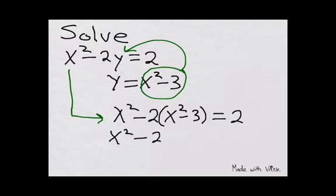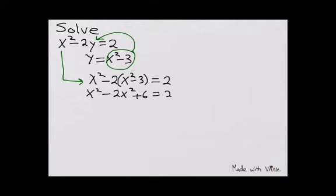x squared minus 2x squared plus 6 equals 2. Now I can write that as negative x squared equals negative 4, or x squared equals positive 4.